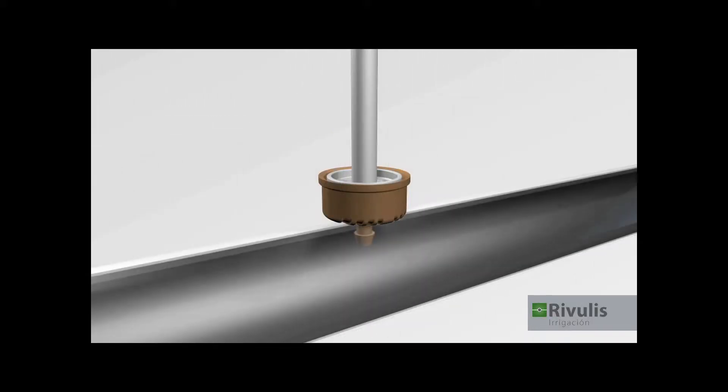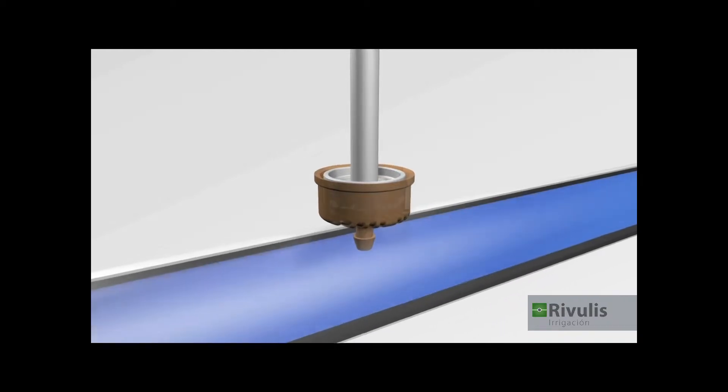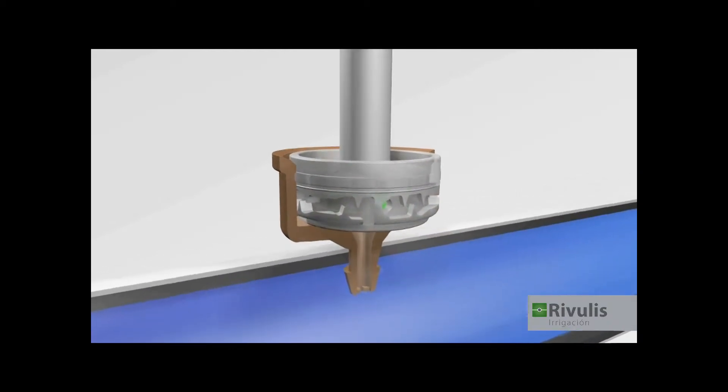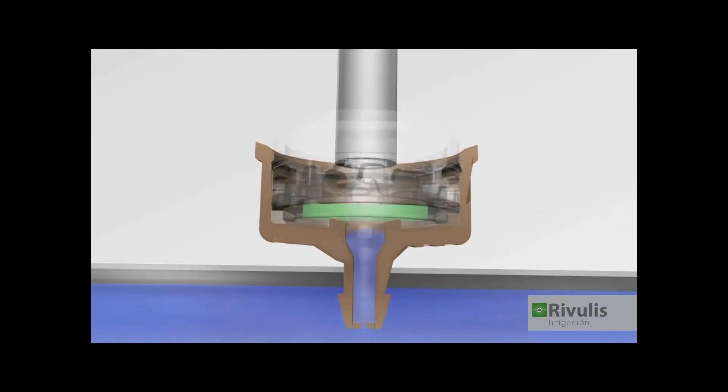The SuperT flow regulated online dripper utilizes differential regulation. The water pressure from the tube drives the water through the filter, pushing the membrane from the bottom towards the regulating chamber.